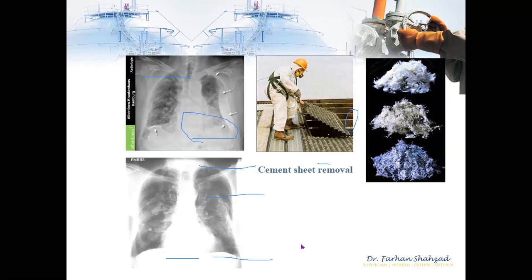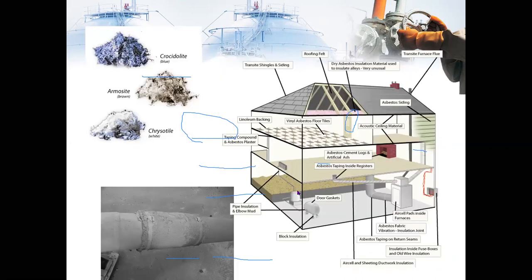Here we have pictures showing the different types of asbestos and how they impact and press onto the lungs when you get asbestosis. We can also see where asbestos can be found in old houses — in the siding, ceilings, roofing, basements, door gaskets, pipe insulation, and block insulation. It was fantastic for insulation years ago and was used in various other places as well.